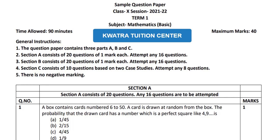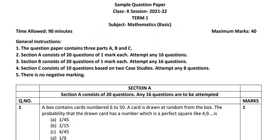Hello everyone, we'll be starting with the sample question paper of Mathematics Class 10 Basic. This paper has maximum marks of 40, based entirely on MCQs. There are 3 sections: A, B, and C, with no negative marking. Section A has 20 questions, attempt 16. Section B has 20 questions, attempt 16. Section C has 10 questions (case study), attempt 8. Total comes to 40 marks.